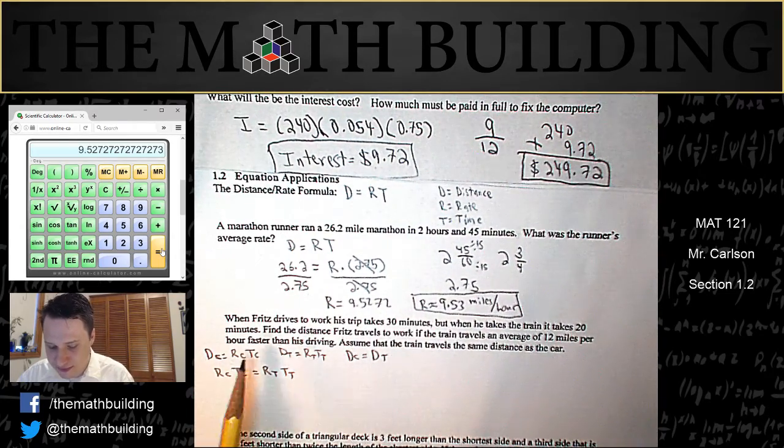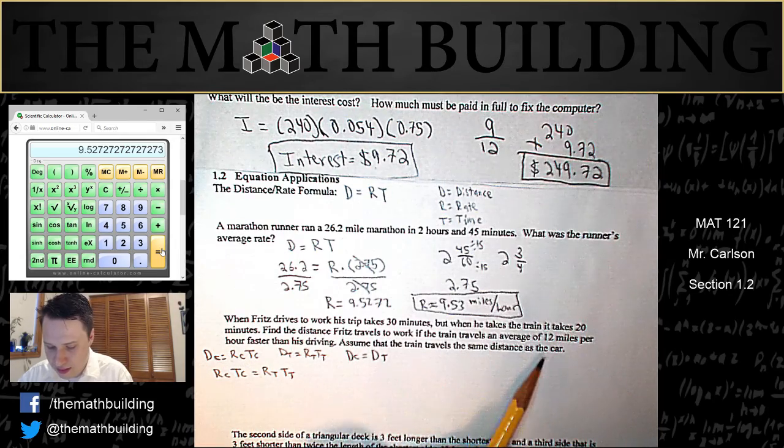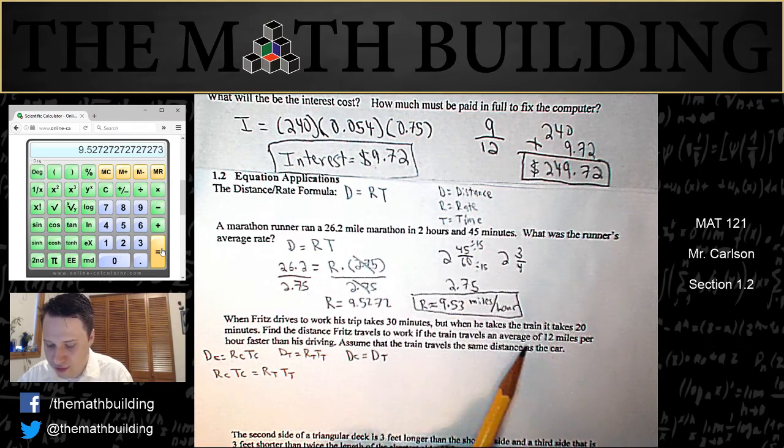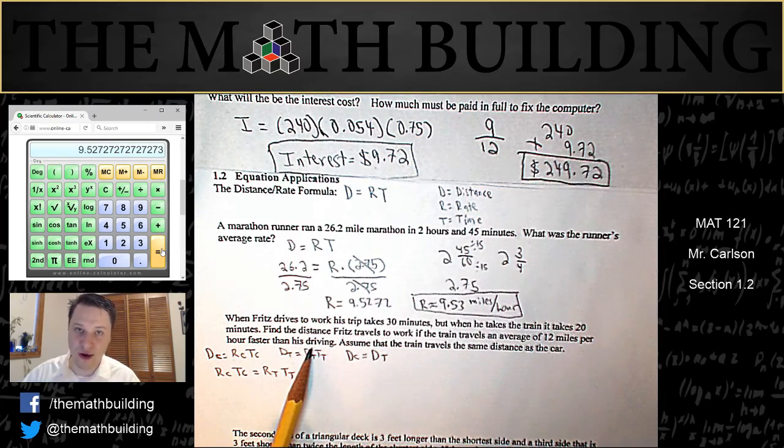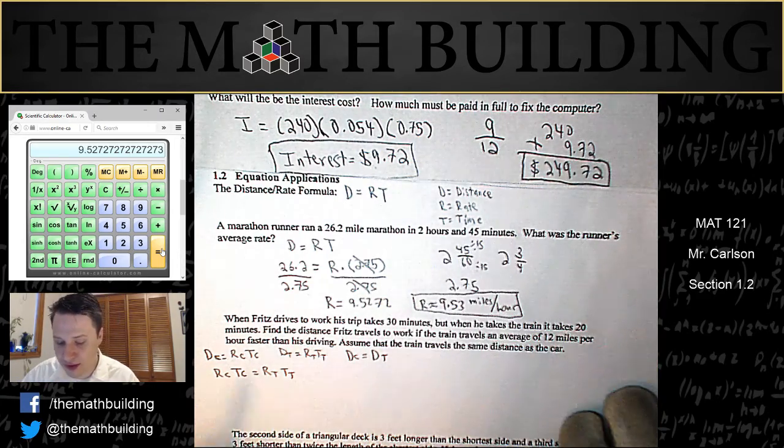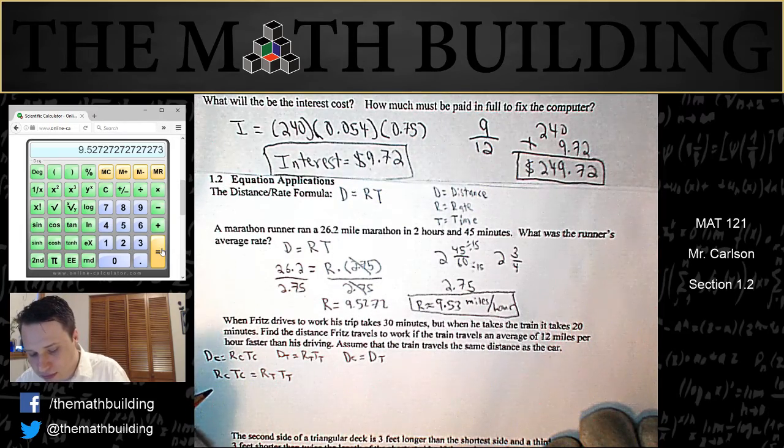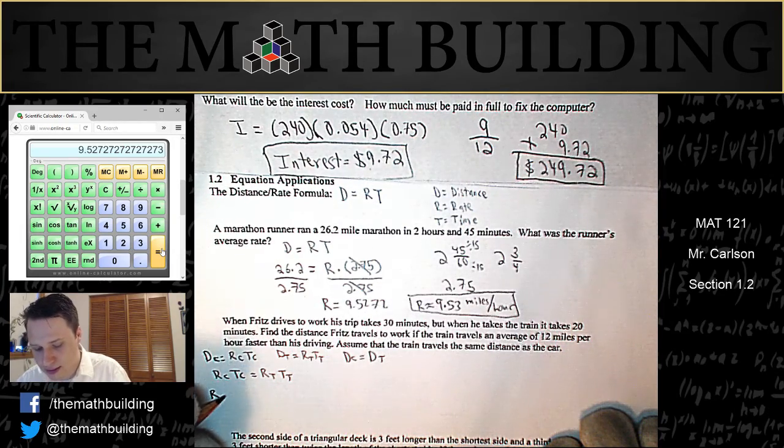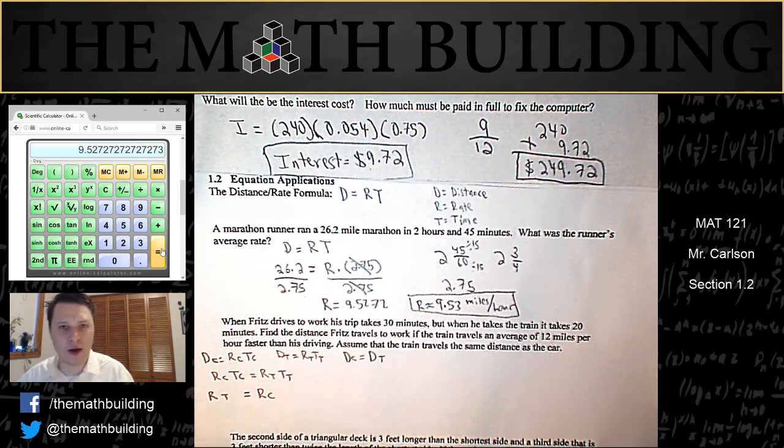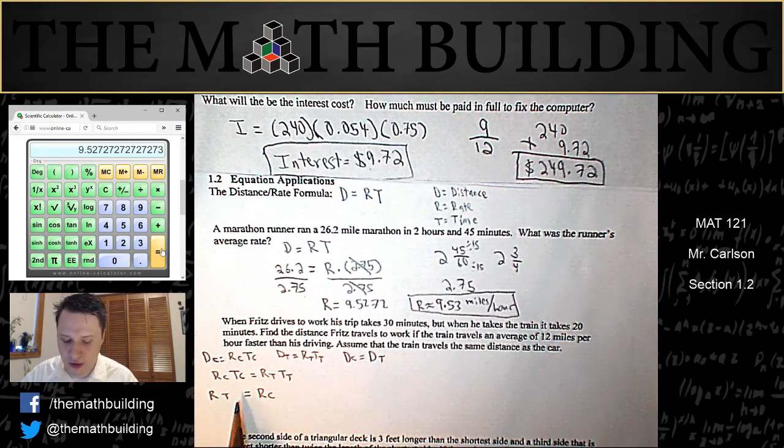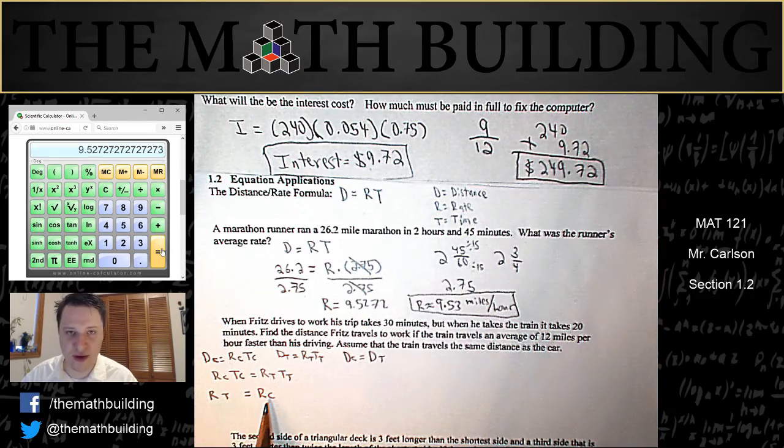Well then notice that it says that the train travels 12 miles per hour faster than his driving. So the rate of the train is faster than the rate of the car. So here's how I do that. I go ahead and set them equal to each other. Even though I know that's not true. I write rt, the rate of the train, equals the rate of the car. But I know that's not true.